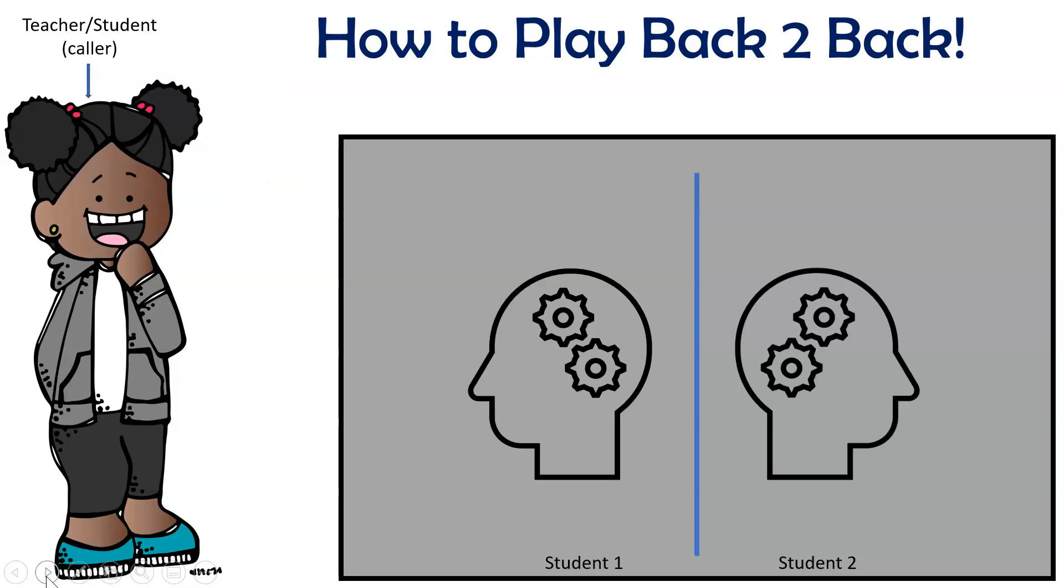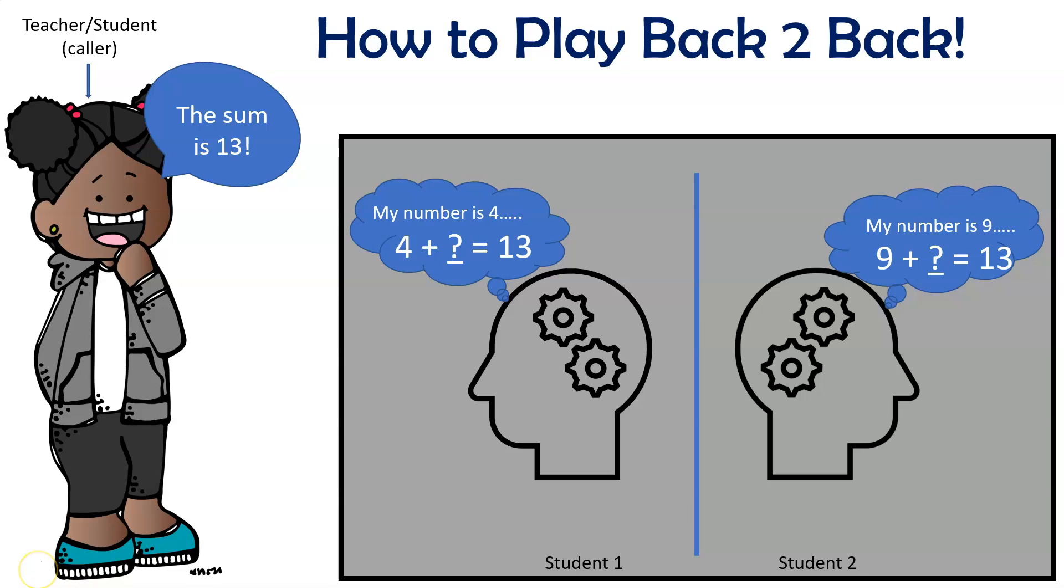Let's get into how it all works by starting off with Addition Back to Back. The teacher or student caller will say, write any digit 1 through 9. So let's say that student 1 writes a 4 and student 2 writes a 9. The teacher or student caller would then quickly add the two numbers and then would say out loud, the sum is 13.